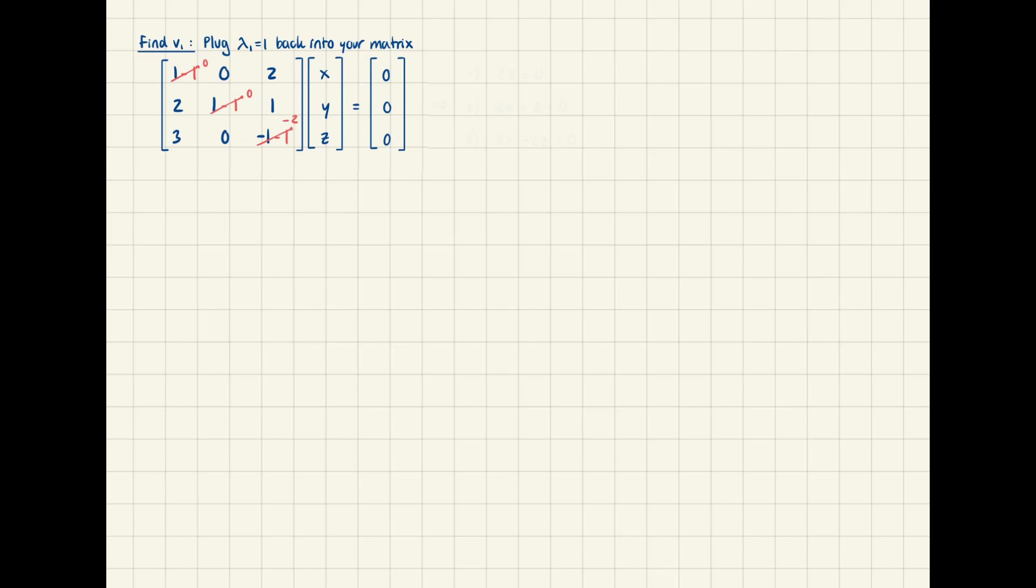Go ahead and multiply everything out to make a system of three linear equations. The x, y, and z line up with their respective polynomial slots, so our first row just becomes 2z equals zero because the x and y coefficients are both zero. The second is 2x plus z equals zero, and the third is 3x minus 2z equals zero. Now we can begin narrowing down the solution by setting x equal to one. When x equals one, equations two and three produce non-equivalent values for z, so we know that x is not in fact equal to one.